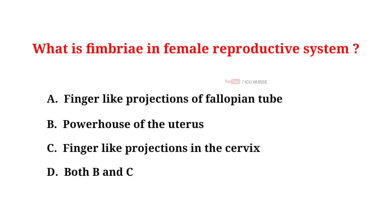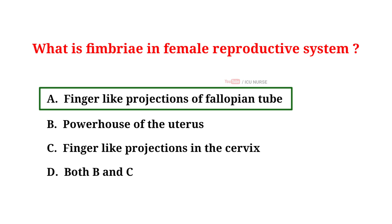What is Fimbriae in the Female Reproductive System? A. Finger-like projections of fallopian tube. B. Powerhouse of the uterus. C. Finger-like projections in the cervix. D. Both B and C. The correct answer is A: Finger-like projections of the fallopian tube.